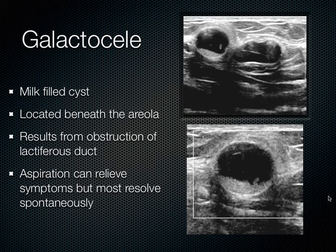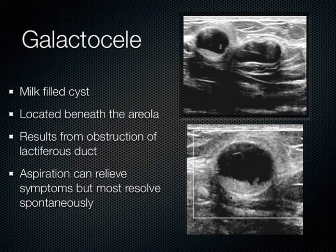Sonographically, galactoceles can sometimes be seen as complicated cysts with hypoechoic and hyperechoic areas. Depending on the age of their contents and the amount of fat and water present, you'll see varying morphologies. When new and composed mainly of milk, they appear more as solid masses with increased posterior acoustic enhancement. As galactoceles age, the fat-water-protein content separates and they become more cystic in appearance. On ultrasound, a fluid-debris level can be seen, which shifts as the patient moves.